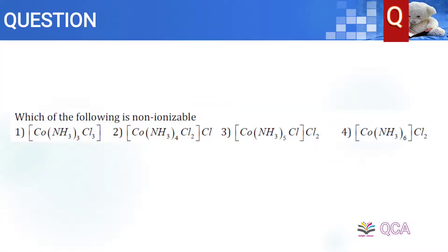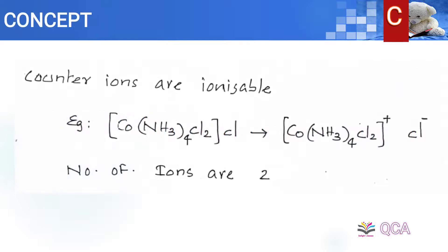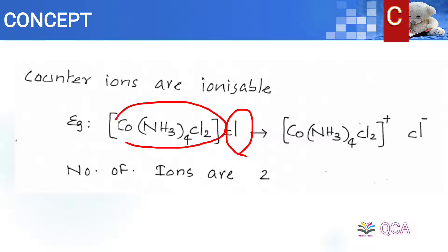Which of the following is non-ionizable? Counter ions are ionizable — these are the counter ions. The ligands are ions that are present in the coordination complex.